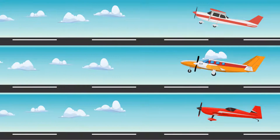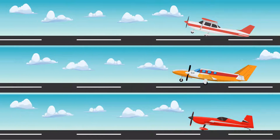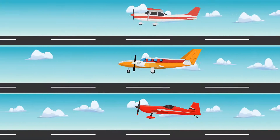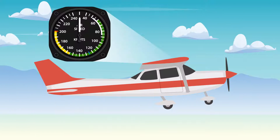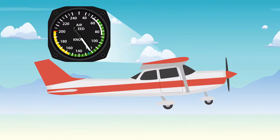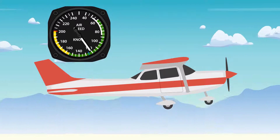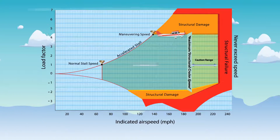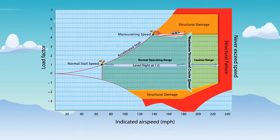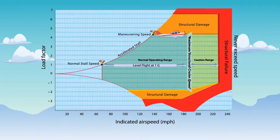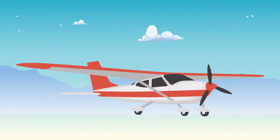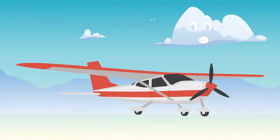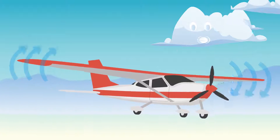V-speeds are speeds defined for specific maneuvers in specific aircraft at specific configurations. VA is the aircraft's design maneuvering speed — the maximum speed at which the limit load can be imposed, either by gusts or full deflection of the control surfaces, without causing structural damage.